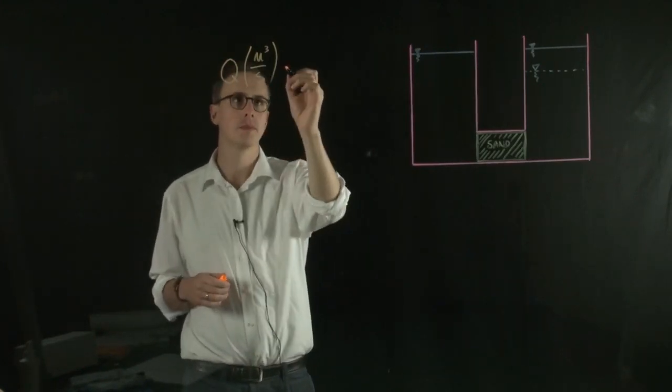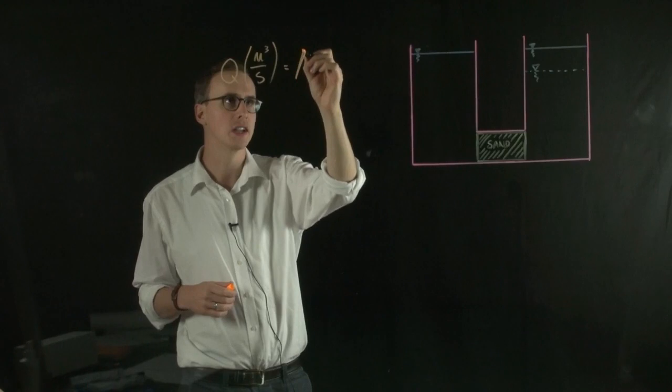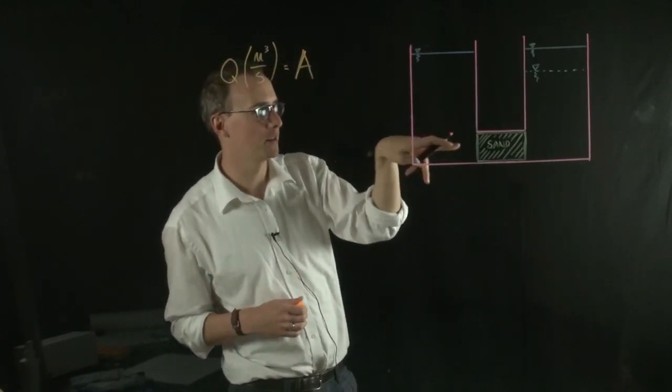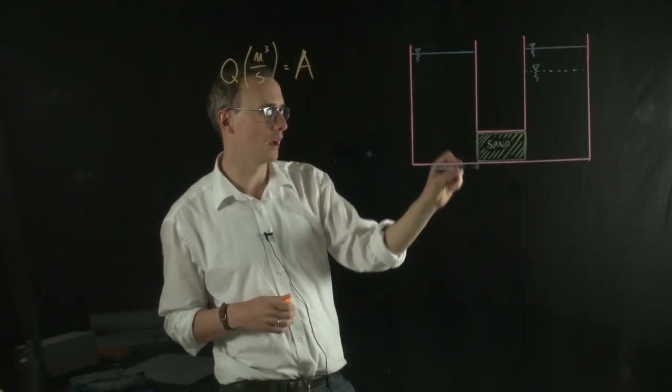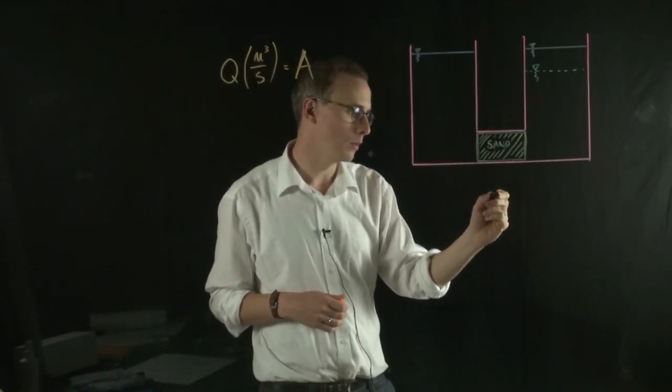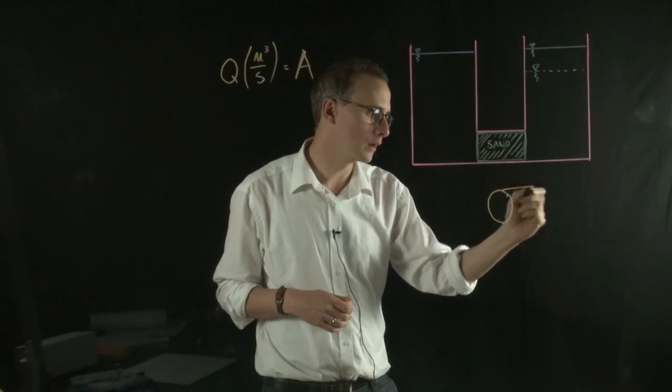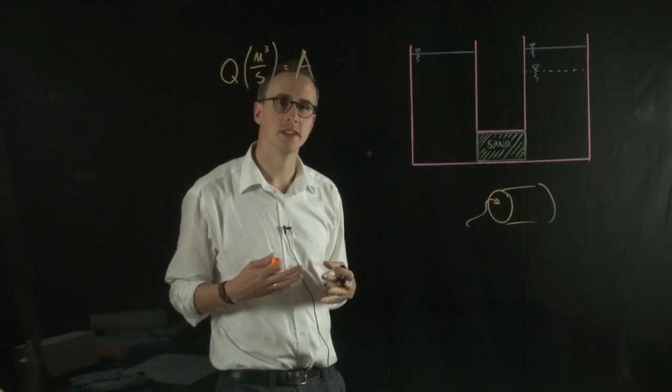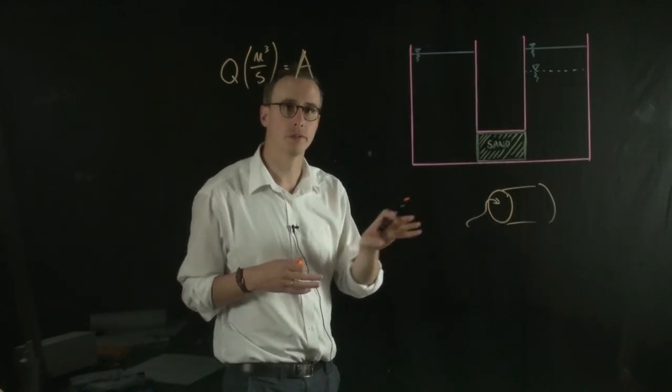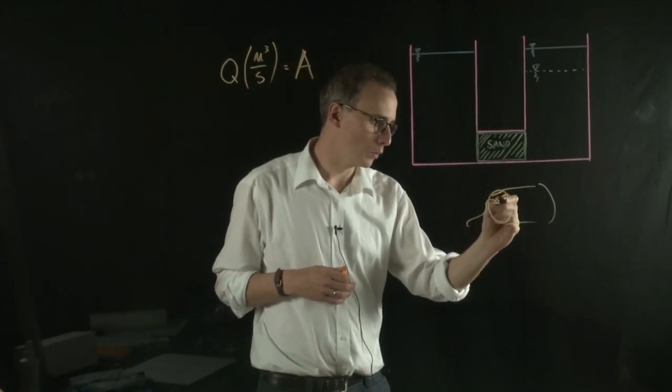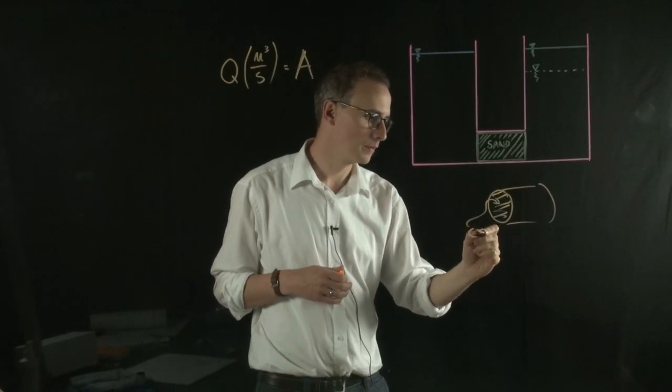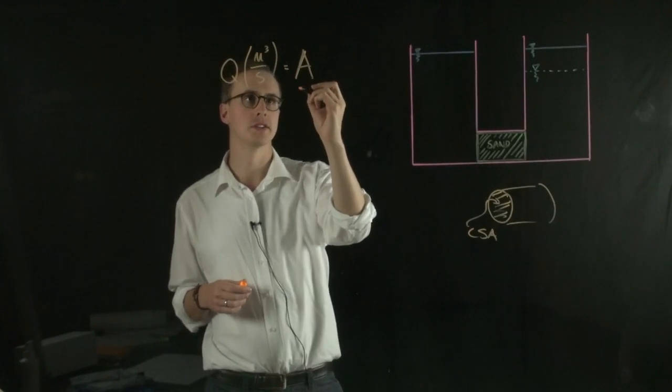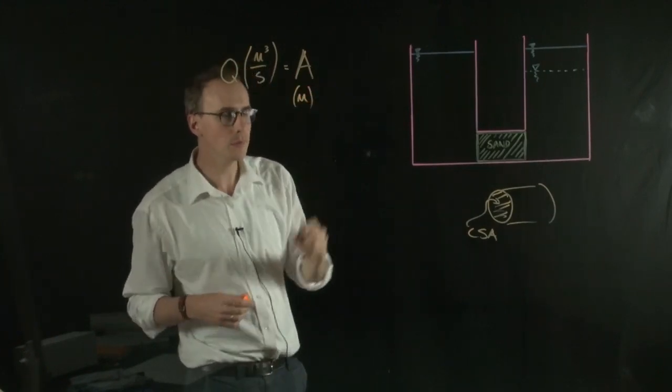And it says that this flow is equal to the cross-sectional area of the flow. So in this case if we were looking at the sand in this direction and if it was a round tube, we might be looking at a tube that looks something like this. Darcy's Law is interested in the cross-sectional area of the flow path, so it would be this cross-sectional area in this example. And that has units of meters squared.